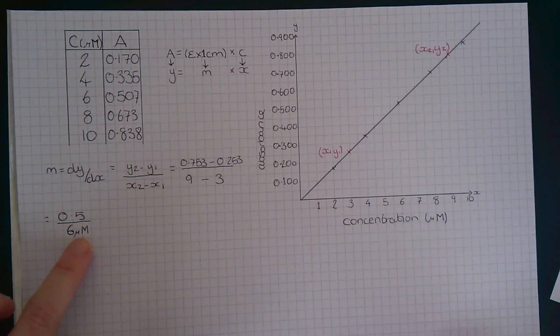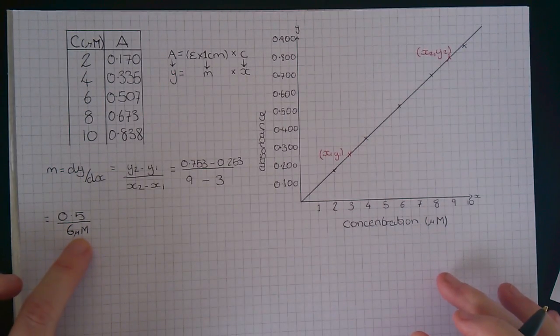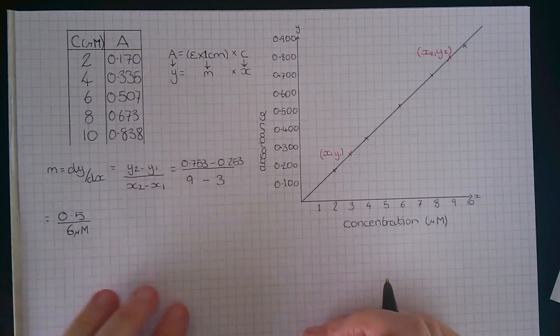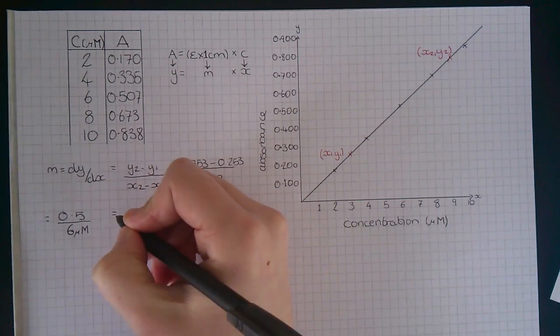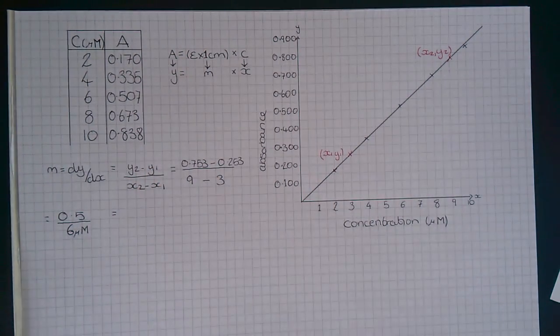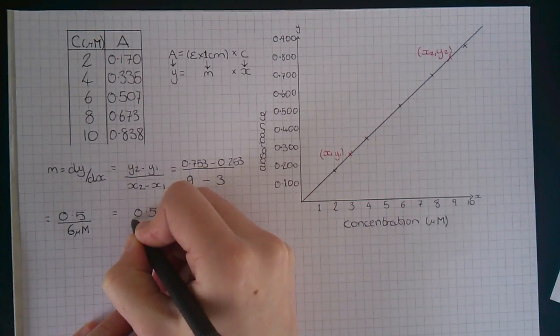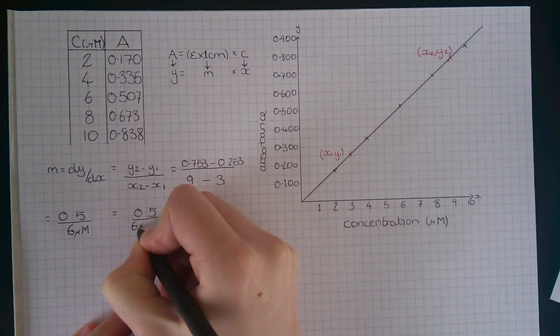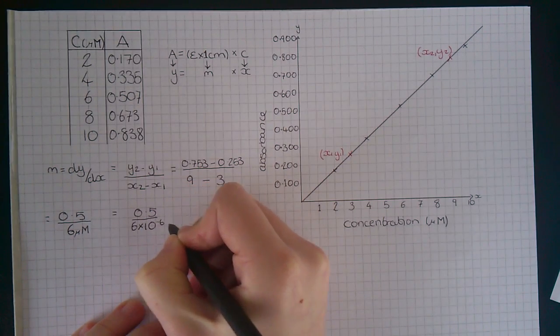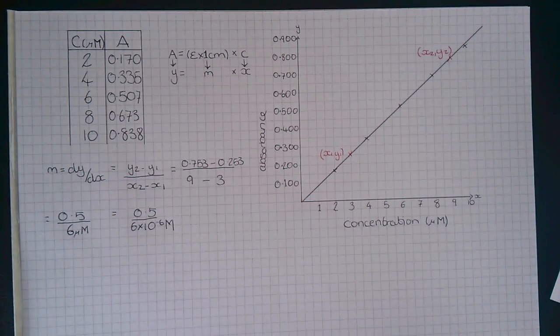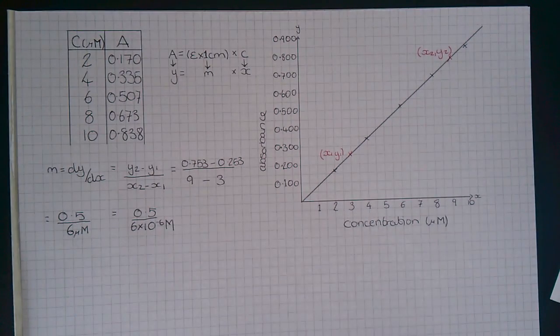So to convert from micromolar to molar, we just need to times by 10 to the minus 6. So this can be written as 0.5 divided by 6 times 10 to the minus 6 molar units.